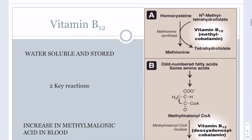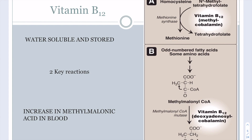Vitamin B12 is important for two reactions. First, the conversion of homocysteine to methionine, which also requires tetrahydrofolate. Second, when you have odd-numbered fatty acids — such as 13 or 15 carbon chains — they generate methylmalonyl-CoA, and you need vitamin B12 to convert that to succinyl-CoA. Succinyl-CoA can then enter the TCA cycle to make ATP. Those are the two key reactions for vitamin B12.